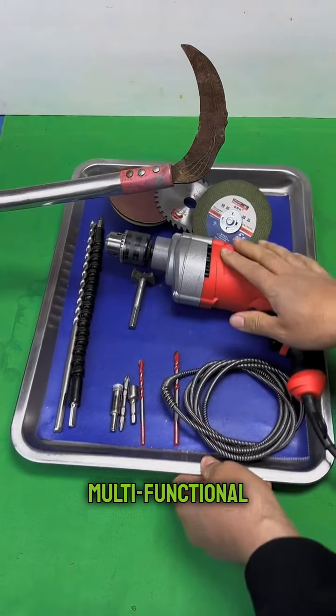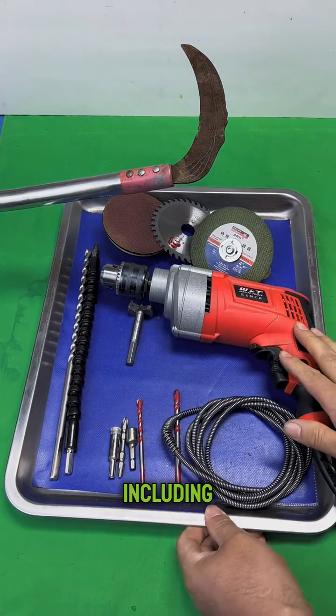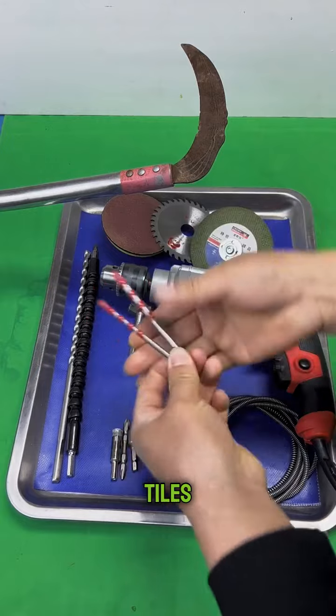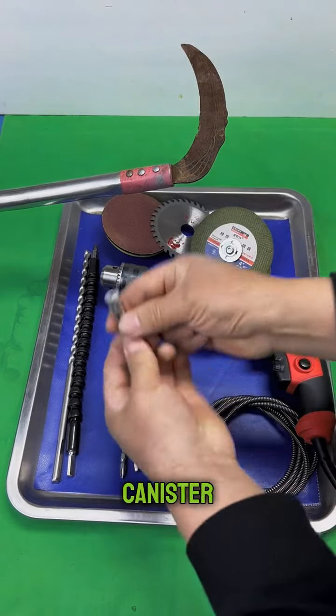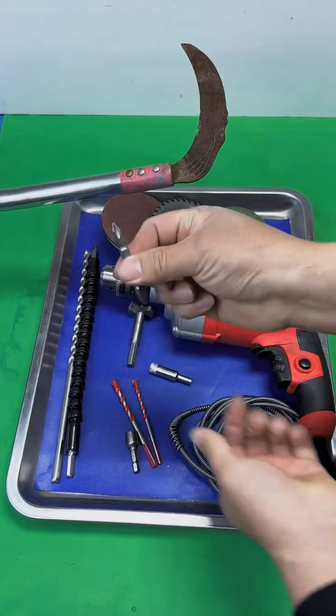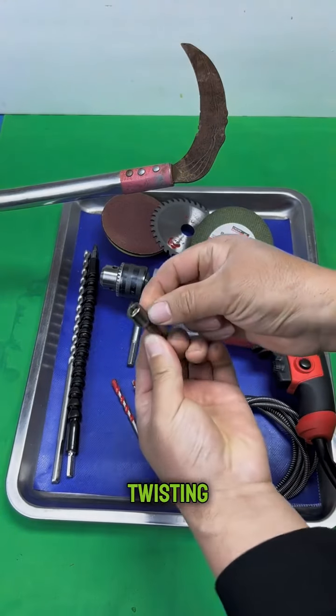This set is multifunctional. It comes with many accessories including two drill bits for tiles and concrete walls, iron plates, and steel pipes. This steel canister drills glass and porcelain. A splitting screwdriver for twisting screws.